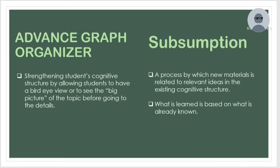The advanced organizer: the way to strengthen the student's cognitive structure is by using advanced organizers that allow students to already have a bird's-eye view, or to see the big picture of the topic to be learned, even before going into the details or discussions. For example, as a future educator, I should give my students ideas or hints about a topic so that they can participate and be active during class, creating a connection between the students and the teacher.